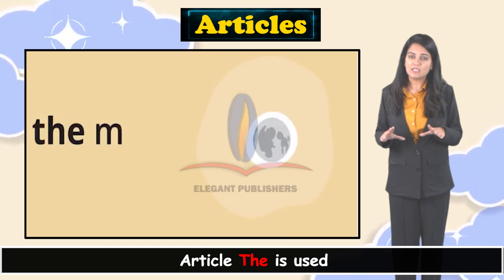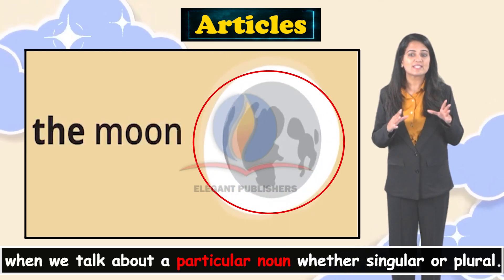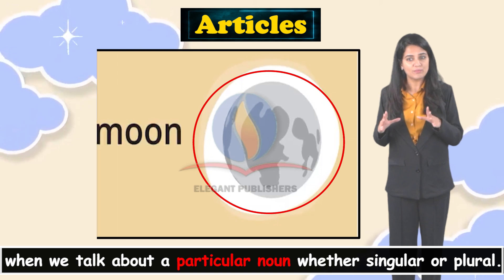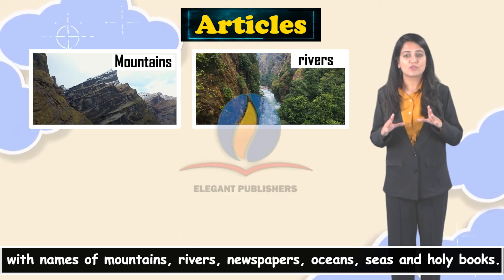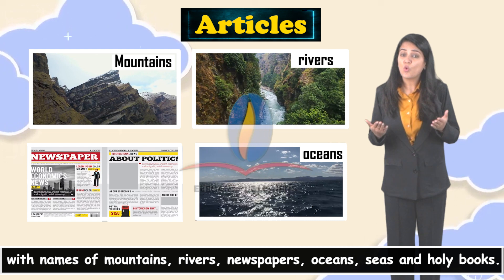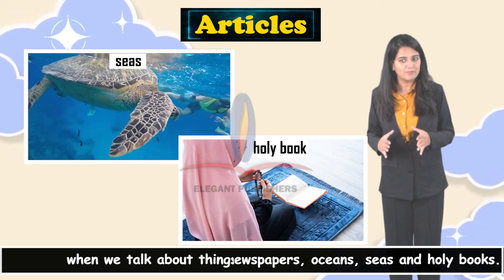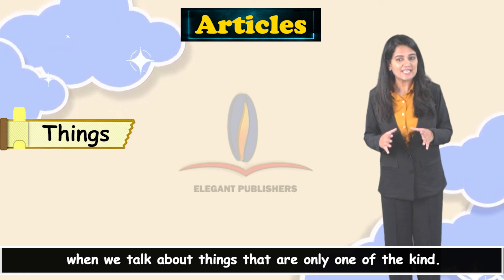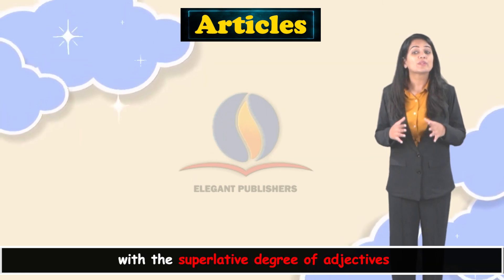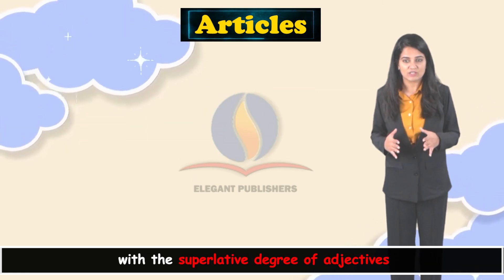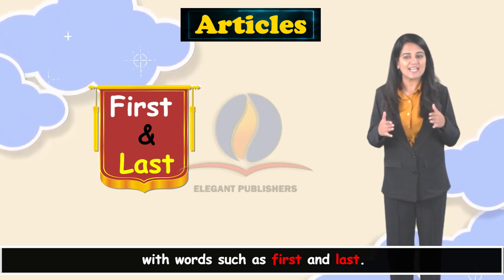Article 'the' is used when we talk about a particular noun whether singular or plural; with names of mountains, rivers, newspapers, oceans, seas, and holy books; when we talk about things that are only one of a kind; with the superlative degree of adjectives; and with words such as 'first' and 'last'.